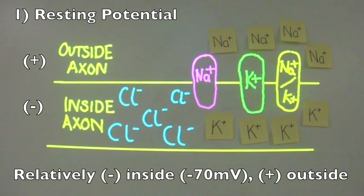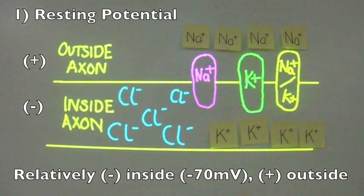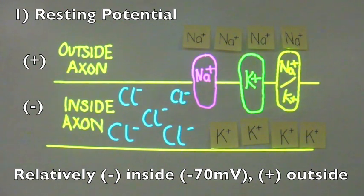You can see this by the relative amounts of chloride ions and potassium ions inside, where chloride ions outnumber the potassium ions.